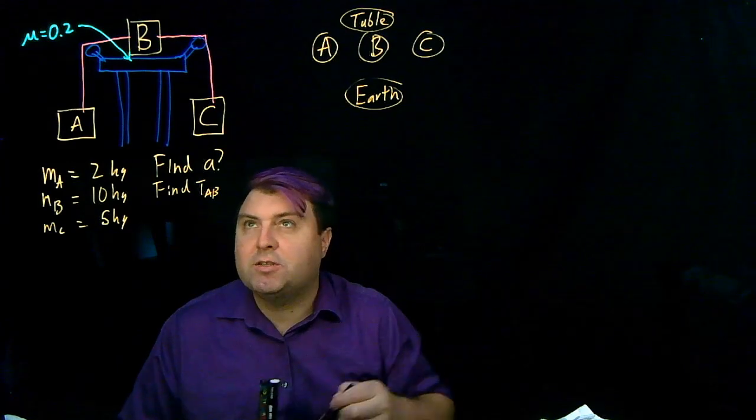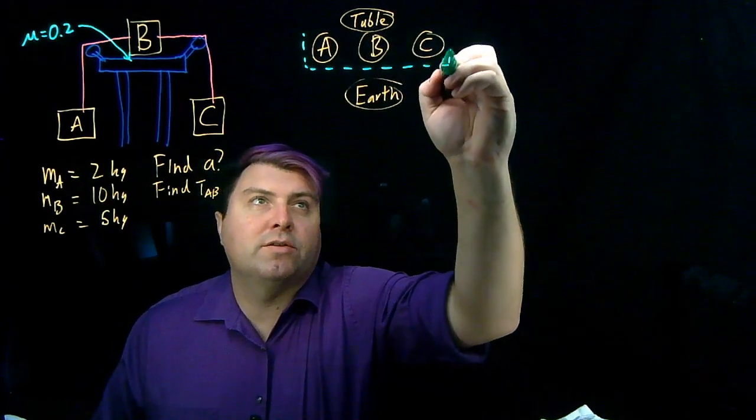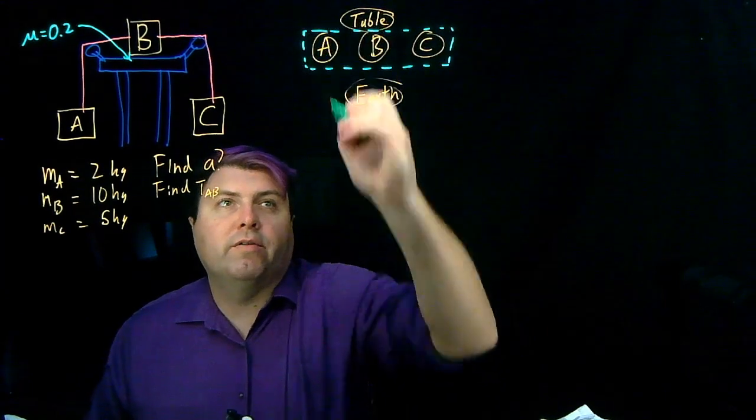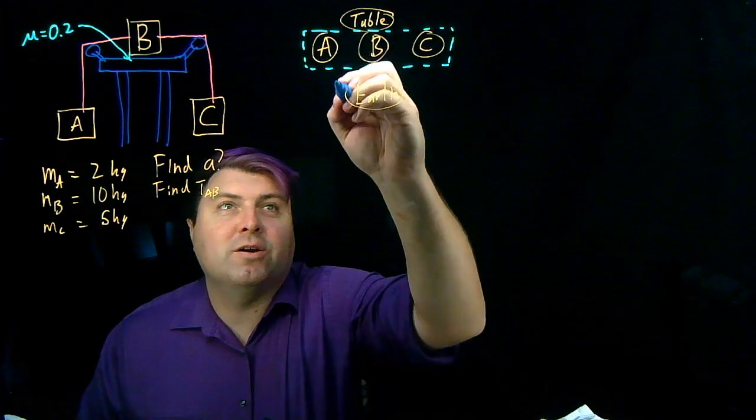So we want our system to be A, B, and C, so we are going to draw a box around all of these. And then we have forces, and quite a few of them, so let's go over them.